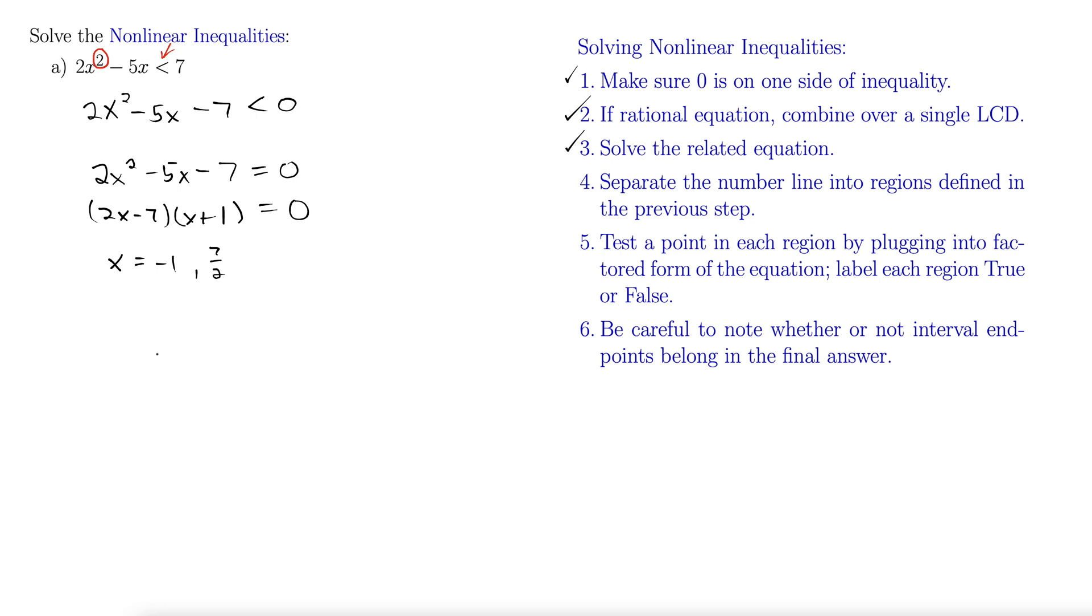So there's step three, that divides up our number line into regions here. So we draw a number line, and I like to put zero in just as a reference. And then negative 1 is about here, so there's a region borderline there. And then 7 halves is 3.5, about here, just so we know where we stand. Step four is done.